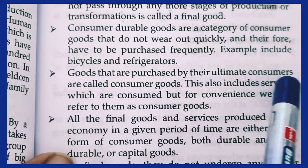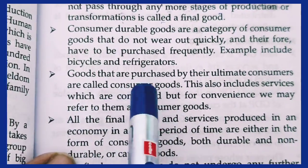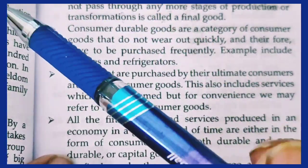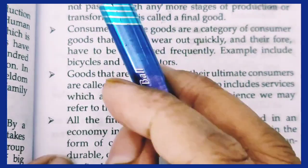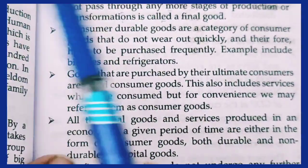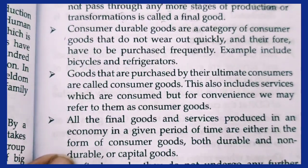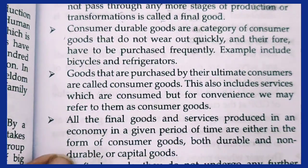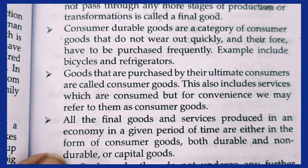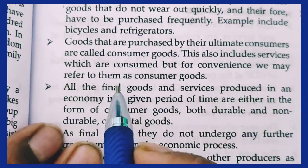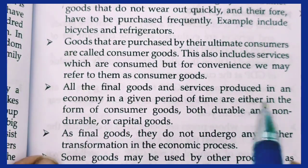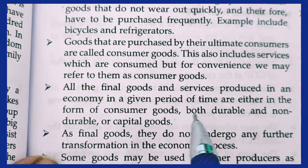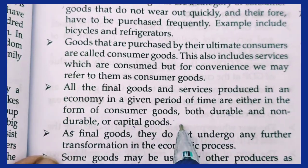Goods purchased by their ultimate consumer are consumer goods. When a wholesaler or retailer buys goods to sell in their shop, those are not consumer goods for them. But when I, as a customer, buy from that shop for my own use, those become consumer goods for me. All final goods and services produced in an economy in a given period of time are either consumer goods — both durable and non-durable — or capital goods.